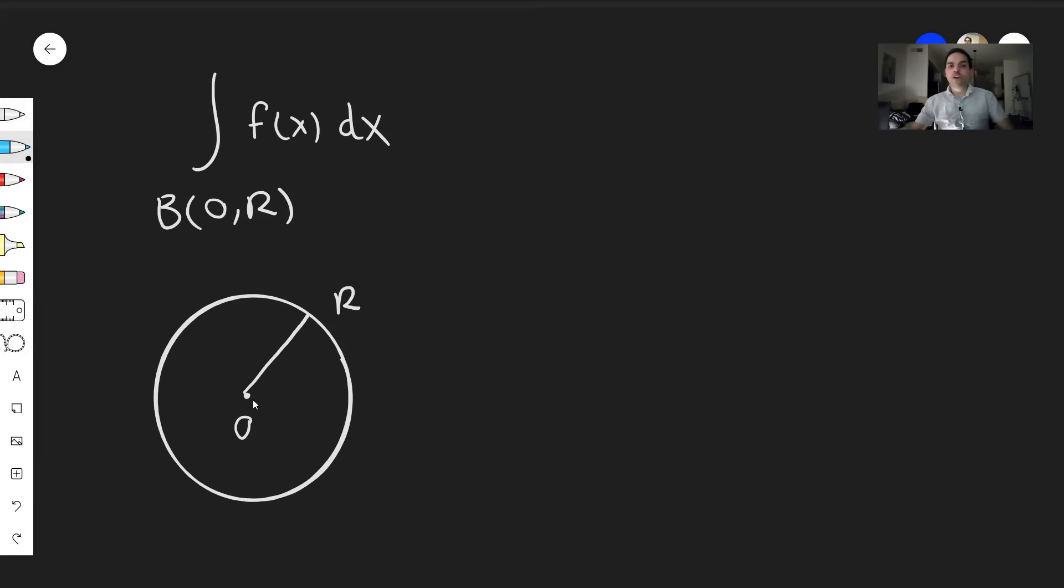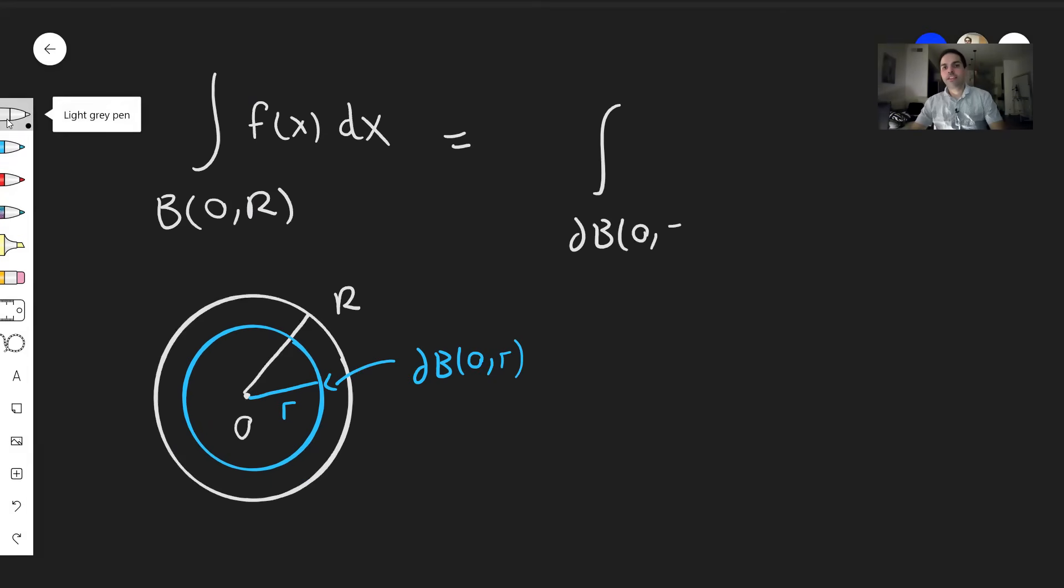Instead of integrating over the whole ball, first integrate on a little shell, which is just a sphere centered at zero and radius little r. So first integrate f on this little sphere, ∂B(0,r). So f of x. But here we have to use the measure on that little sphere. So ds of x.